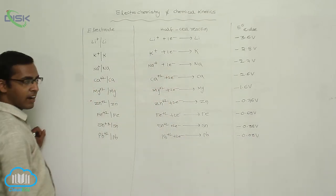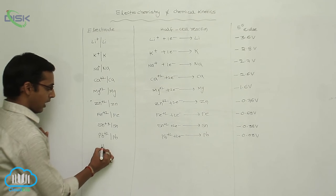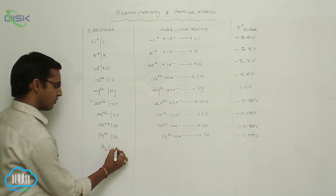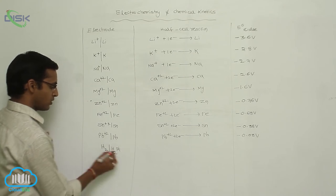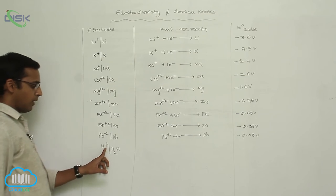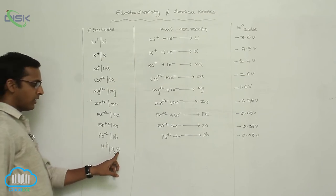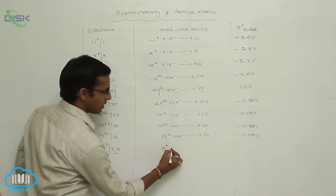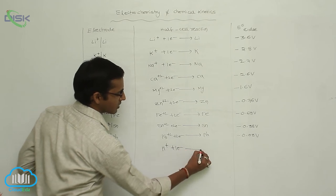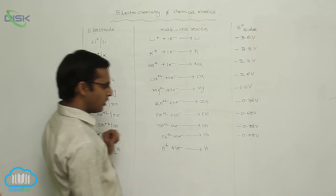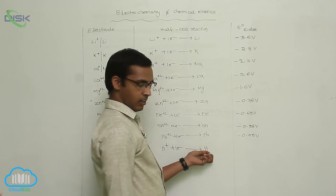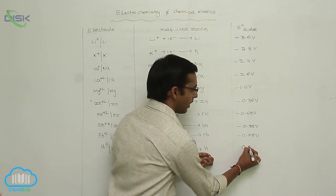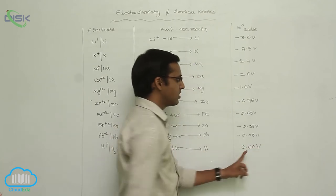Next is the standard hydrogen electrode. It is represented as H⁺ | H with platinum acting as the standard electrode. H⁺ gains one electron and is converted to H. The standard hydrogen reduction potential value is 0.00 V — this is the standard condition reference point.